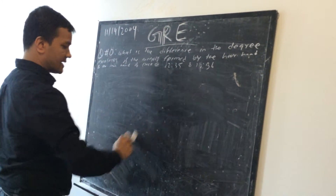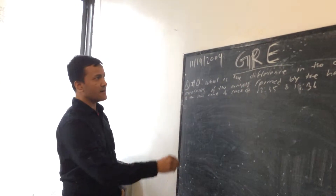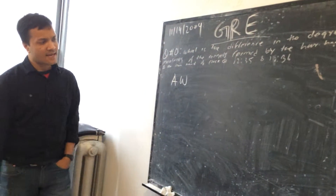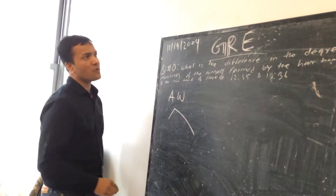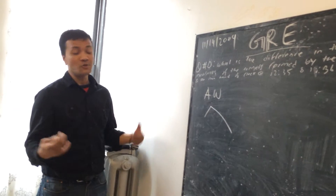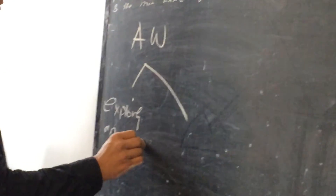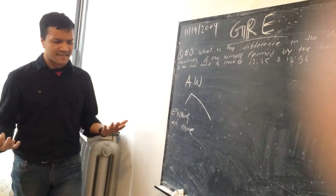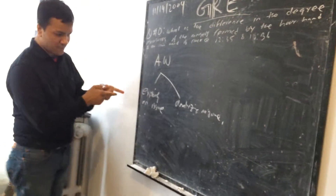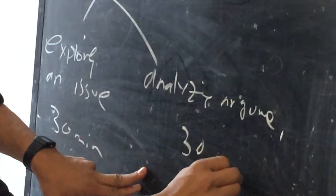The GRE is a 3-hour 45-minute test and has many areas. The first one is Analytic Writing. Analytic Writing has two parts: the first part is where the student has to explore a given issue — 'Exploring an Issue' — and the second part is 'Analyzing an Argument.'